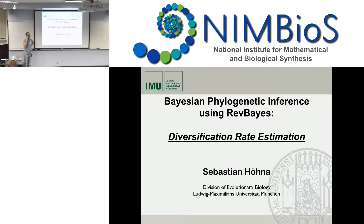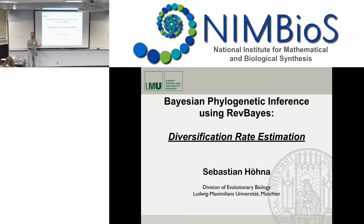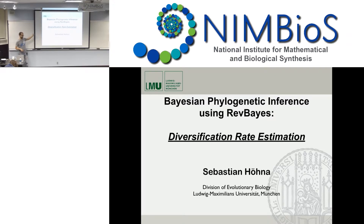The general idea is that yesterday you estimated your time-calibrated phylogeny, and today, once you have that time-calibrated phylogeny, what can we do with it? One of the things we can do is estimate diversification rates. In principle, it should be possible to do all of this jointly, but from the flow of the lectures, it's easier to teach it as consecutive steps in your analysis pipeline.